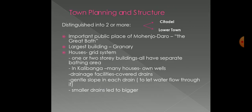Next is town planning and structure. The city is distinguished into two parts: the citadel, which is higher but smaller, found in the western part and might have been used by the ruling class; and the lower town, which is lower but larger, found in the eastern part below the citadel, where brick houses were located and might have been used by common people.